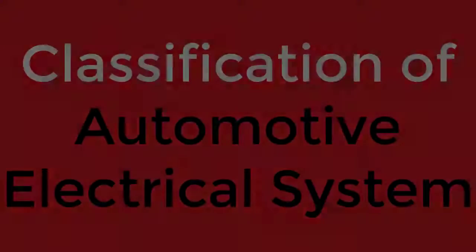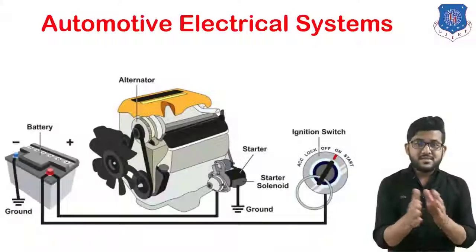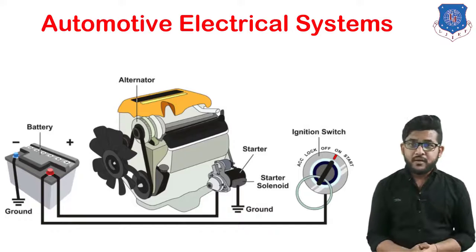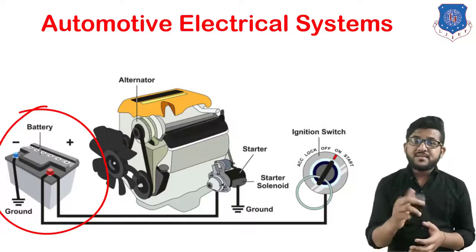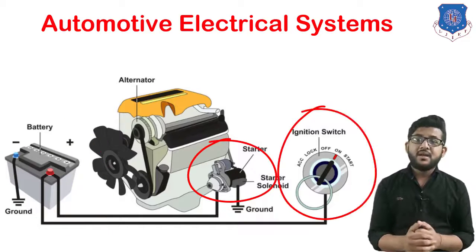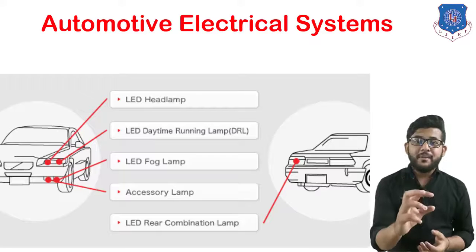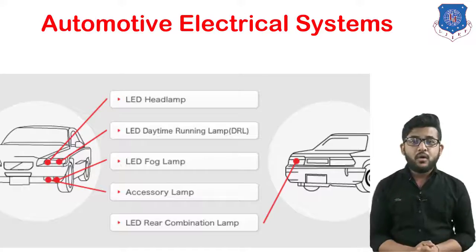Now let's start with today's main topic — the generation, storage, and distribution system in automotive electrical. These systems are classified under five main types: generation, storage and distribution; starting system; ignition system; lighting system; and accessories. Let's see all of them one by one.